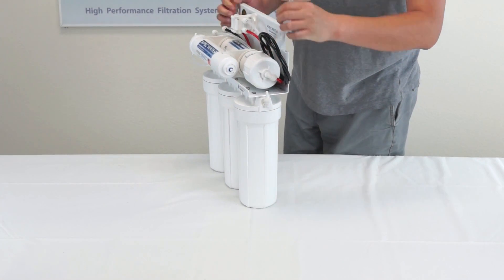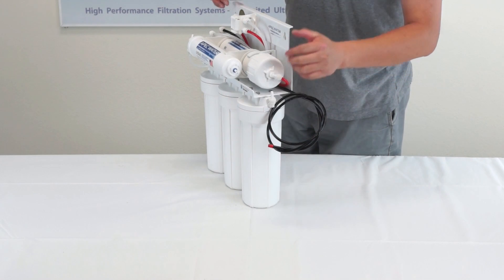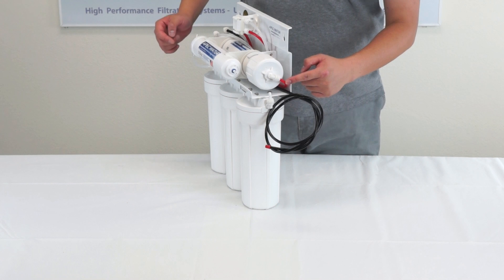Now that the three pre-filters have been installed, we will now go on to installing the fourth stage reverse osmosis membrane filter. Disconnect the red tubing from the membrane housing cap which uses a quick connect fitting.